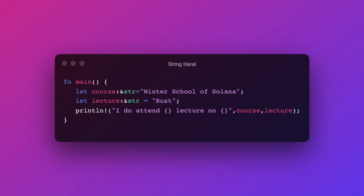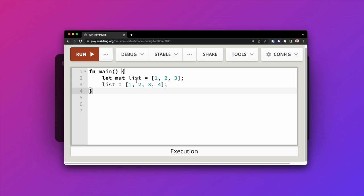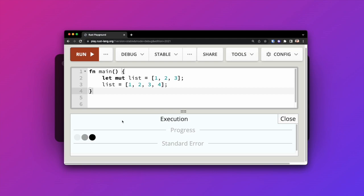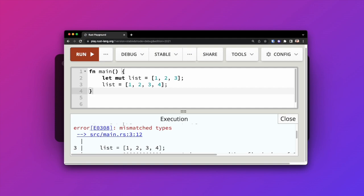Strings in Rust aren't as simple as strings in JavaScript. In JavaScript, strings are mutable and ever-growing — we're used to pushing to a string or array and mutating its length. This works because strings in JavaScript are heap-allocated with no fixed length. In Rust it's a little different. If we try to create a mutable array with a length of three and reassign it to a list with a different length, it will fail. This is because arrays in Rust are stack-allocated with a fixed length.